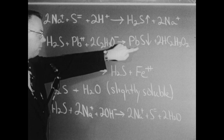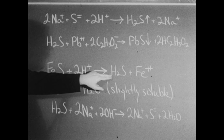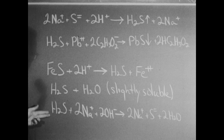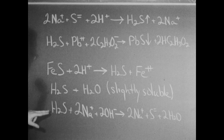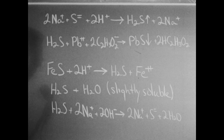The lead acetate paper turned black due to the precipitation of lead sulfide. We then set up a generator utilizing the reaction between ferrous sulfide and hydrochloric acid to produce hydrogen sulfide. We then tested the solubility of hydrogen sulfide in water and in sodium hydroxide solution. We saw that hydrogen sulfide was only slightly soluble in water, but in sodium hydroxide solutions it dissolved rapidly because it reacted with the sodium hydroxide, forming sodium sulfide and water.